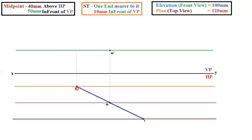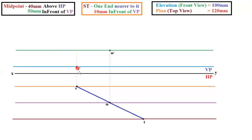The next step: extend S to some distance — this line should be very light. We know that the elevation, that is front view, is 100 mm, so half of it will be 50 mm. Take your compass, measure 50 mm, keep the compass centered at M dash, and cut an arc on this line. You will get a point — draw a locus for that point and name it S dash. The distance between S dash and M dash is 50 mm. Extend the line another 50 mm in the opposite direction to get T dash. So the distance between S dash and T dash is 100 mm — that is your front view.